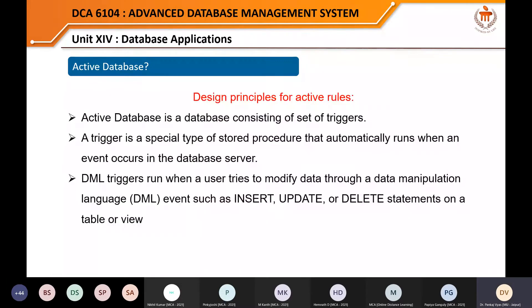This is the design principle for active rules. An active database is a database consisting of a set of triggers — we call them events also. You know event-handling programming in Java: suppose you press a button, an event is generated, and there is a piece of code associated with that event. Before loading the page, on-load paging, after exiting — these are all active rules.